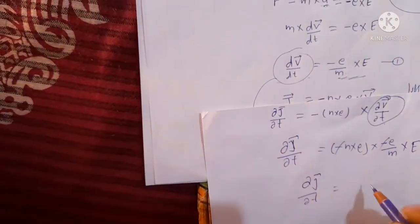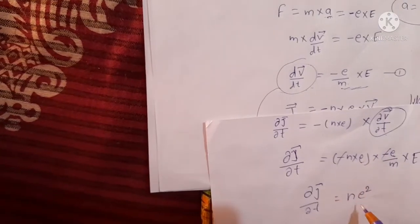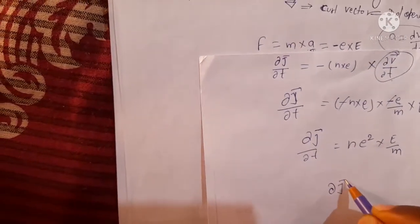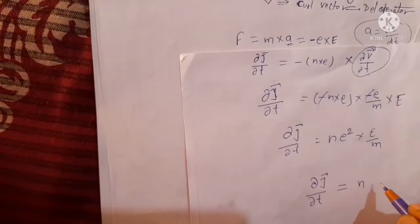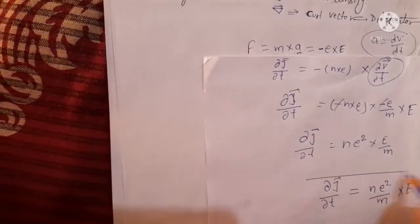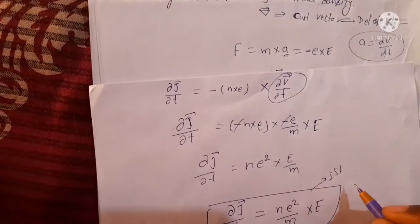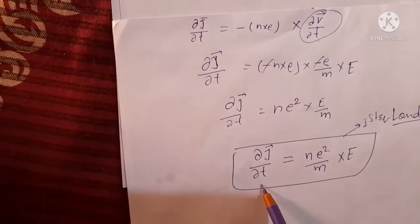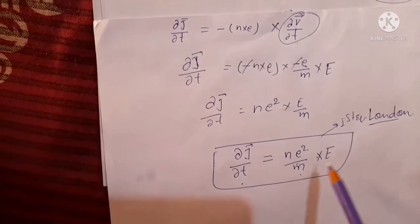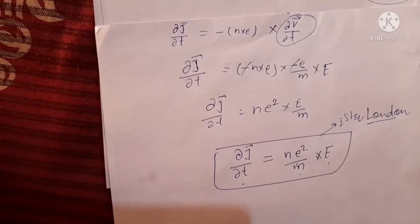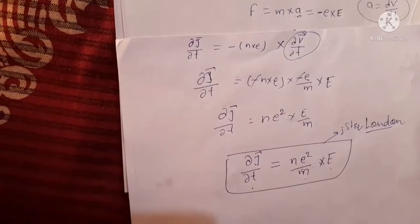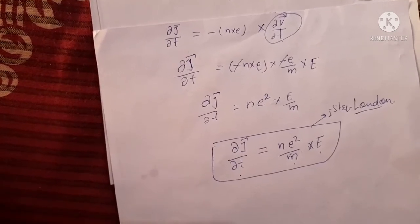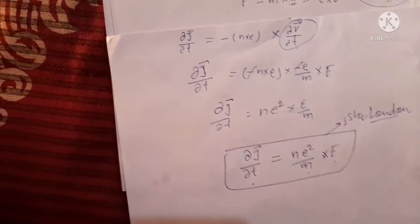So the final result is: del j / del t equals (n e squared / m) multiplied by electric field E. This is the first London equation. This London equation is related to the superconductor, and this superconductor is used in maglev trains. The second London equation will be discussed in the next video. Thank you.